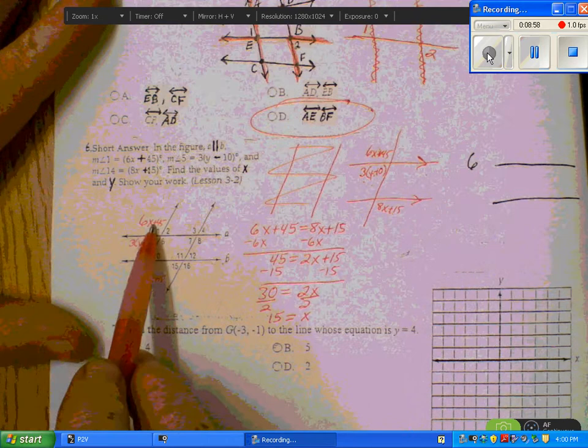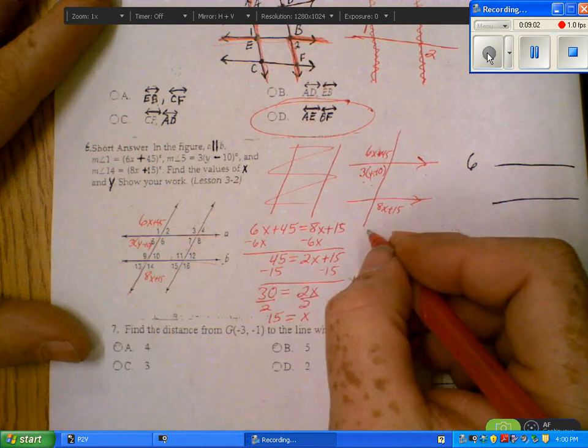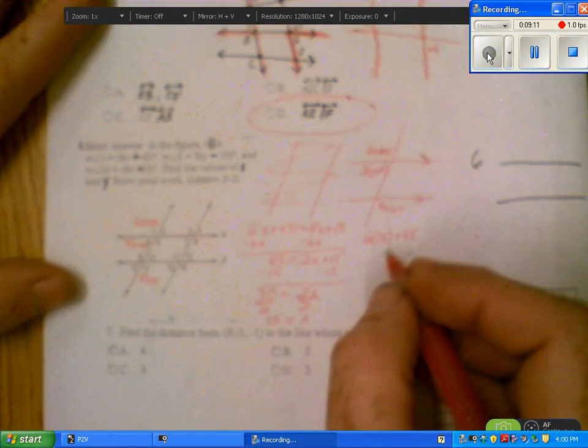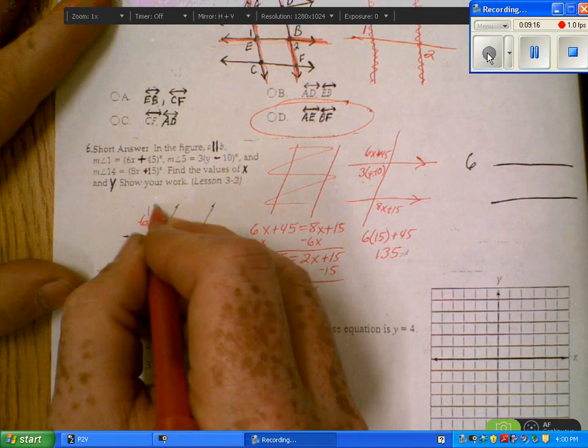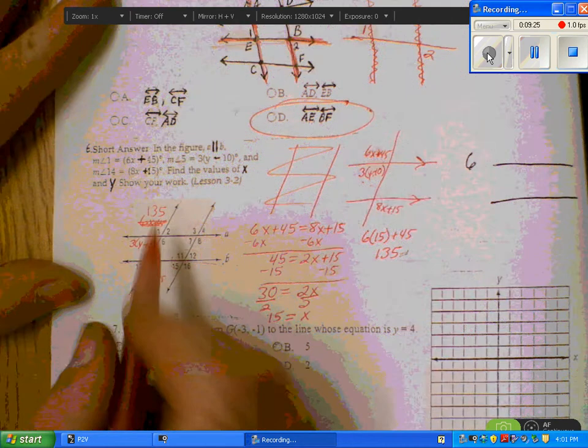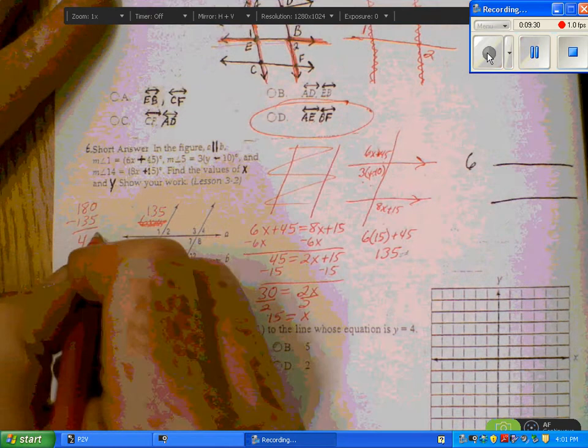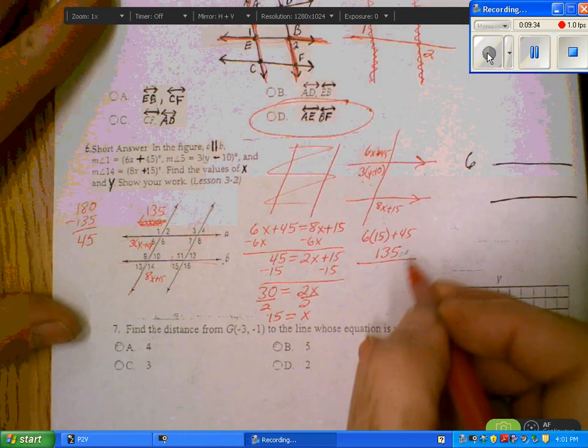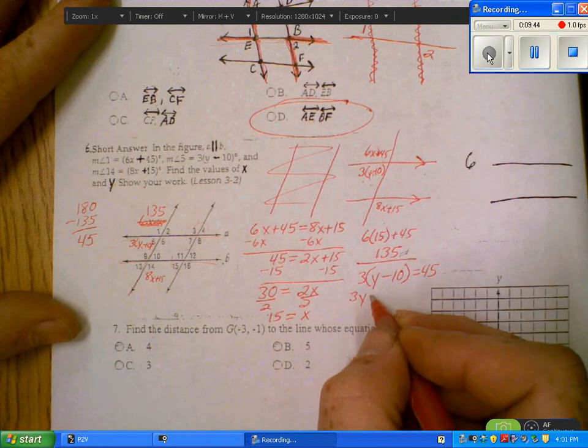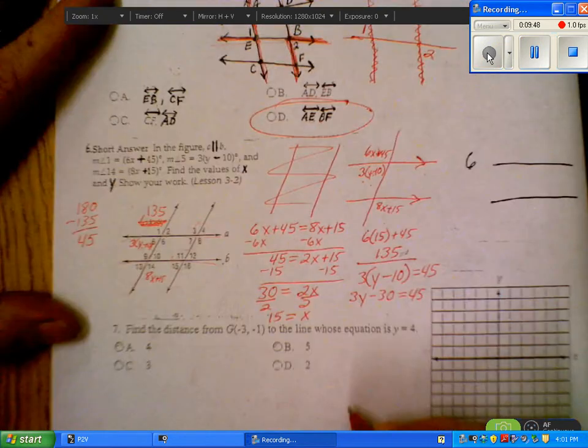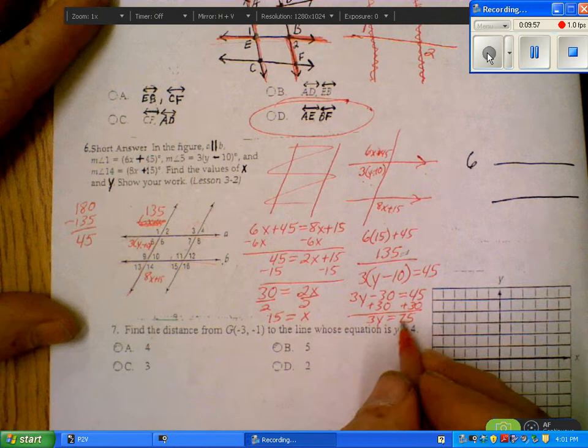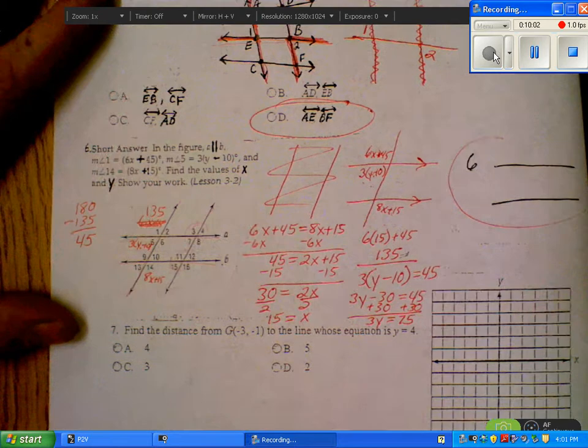Now to get the other answer, we can go back up here and plug in. 6 times 15 plus 45. 6 times 15 is 90 plus 45 is 135, so angle 1 is 135. That means that angle 5, those two have to add up to be 180. Angle 5 we subtract 135 from 180, we get 45. So this is 3 times Y minus 10 equals 45. Distribute. We get 3Y minus 30 equals 45. Add 30 to both sides. 3Y equals 75. And I'll let you figure out what Y is from there.